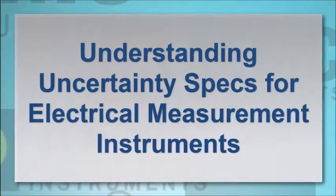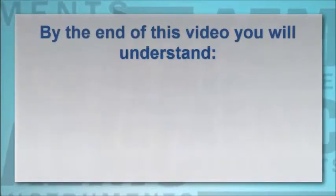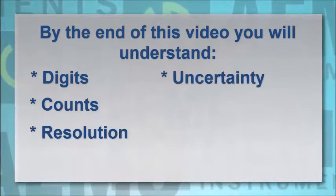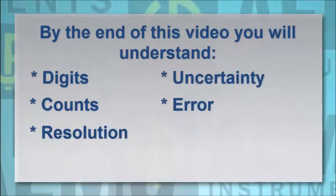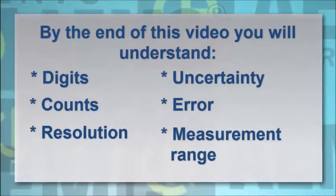This video describes how to determine accuracy for electrical measurement instruments. We define terms such as digits, counts, resolution, uncertainty, and error. We also explain the importance of selecting the right measurement range when taking a reading.